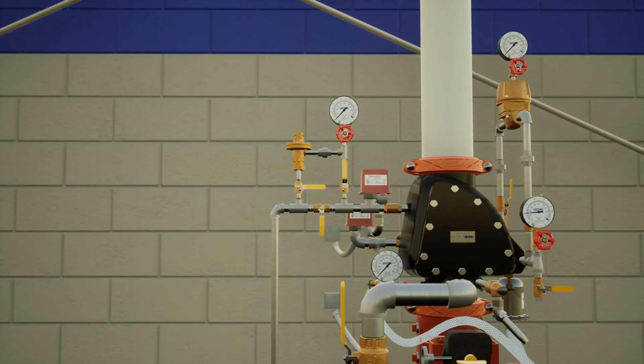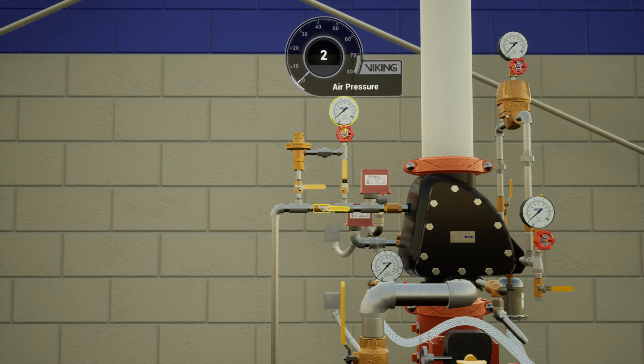Next, reestablish the system air pressure within 5 psi of the set pressure by opening the air bypass valve. Once pressure has been reestablished, close the air bypass valve.